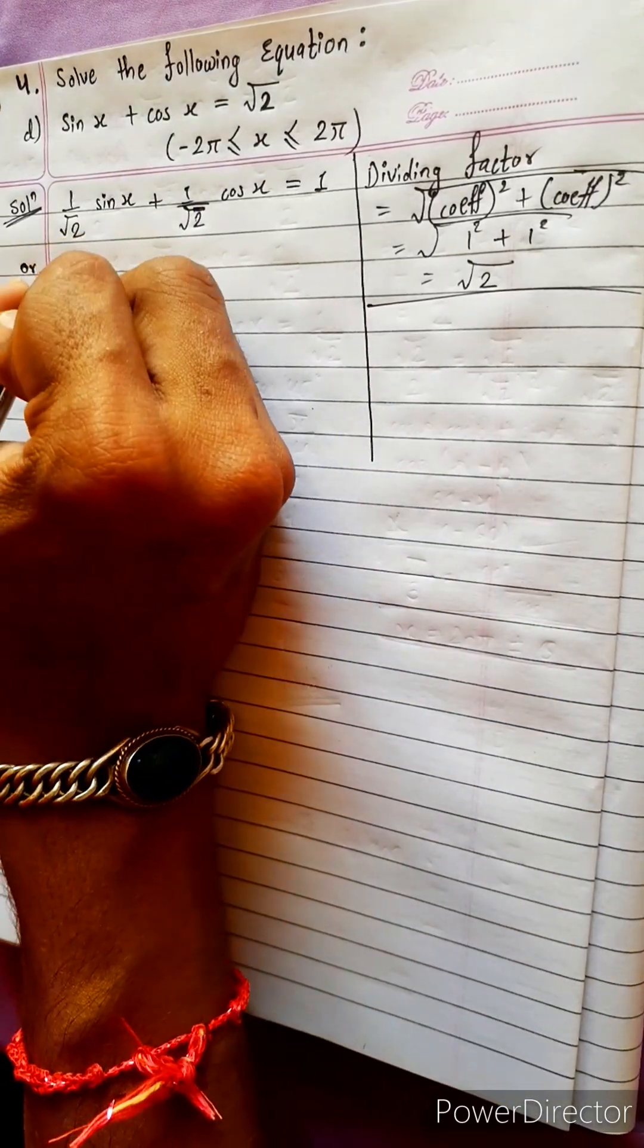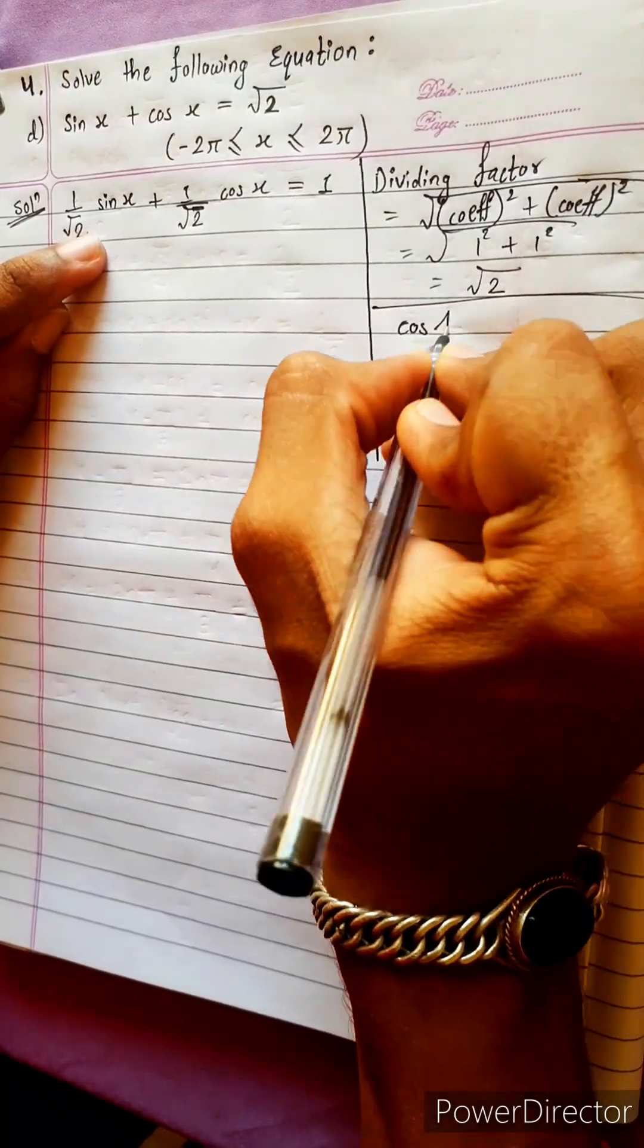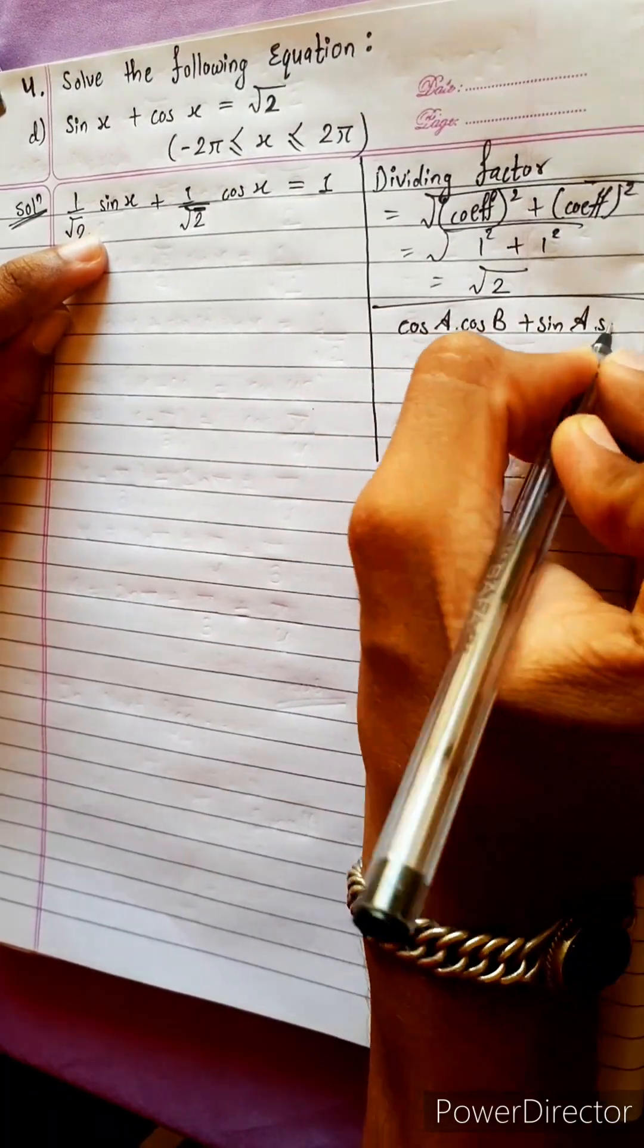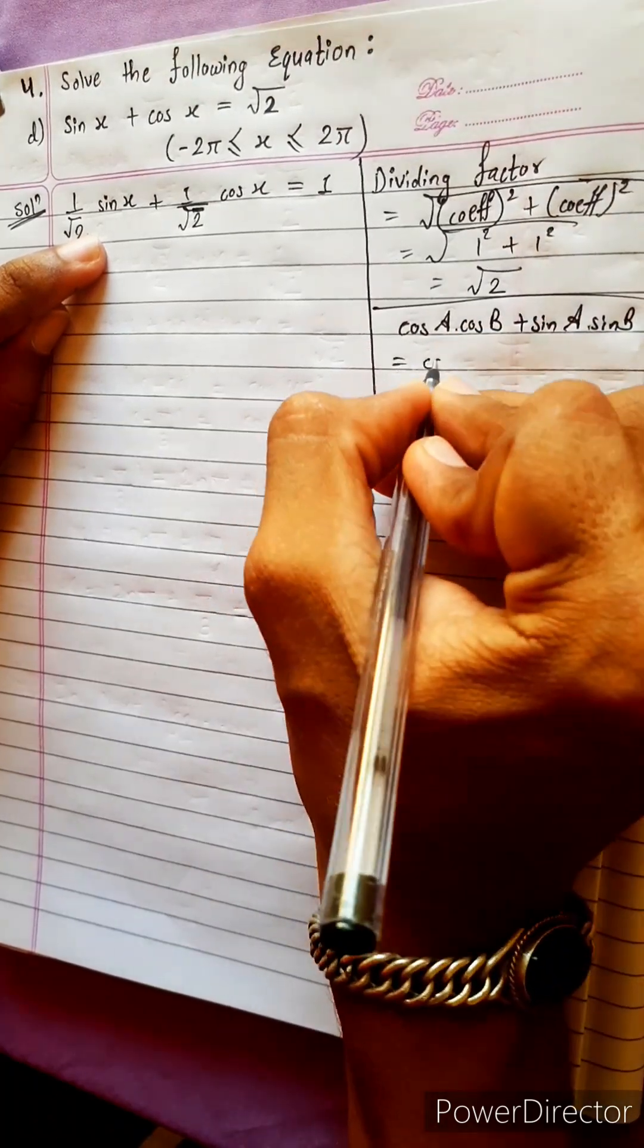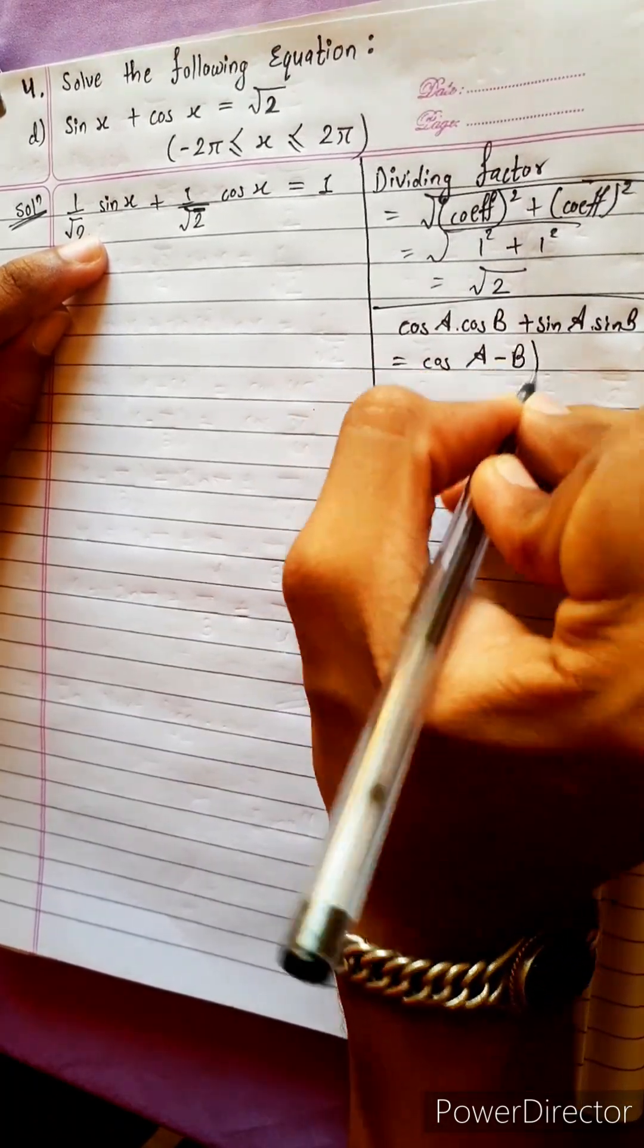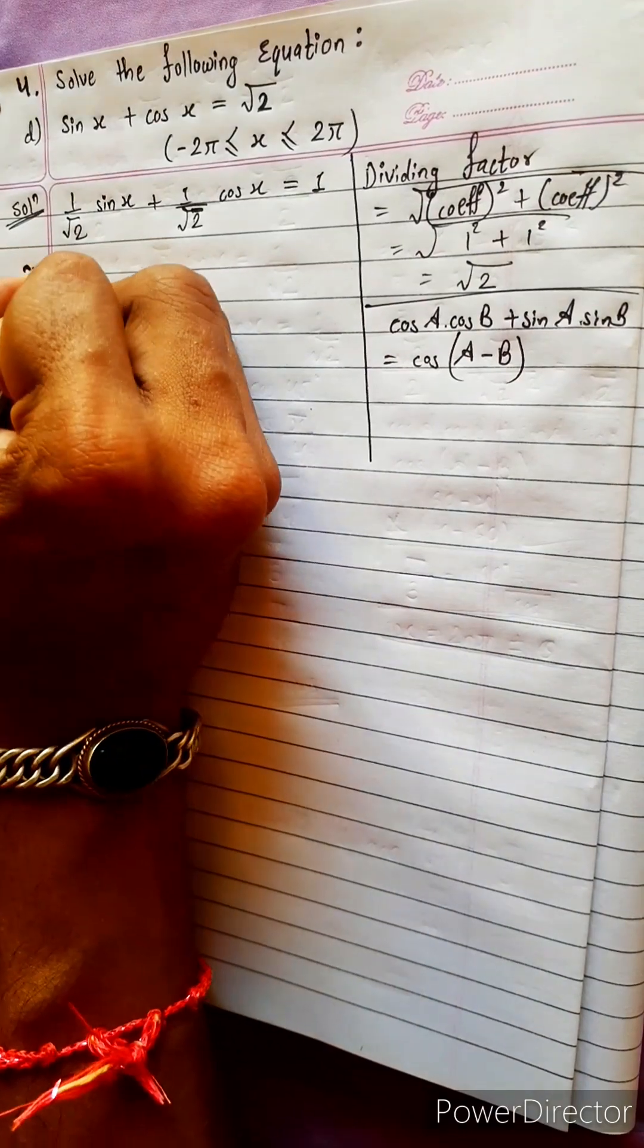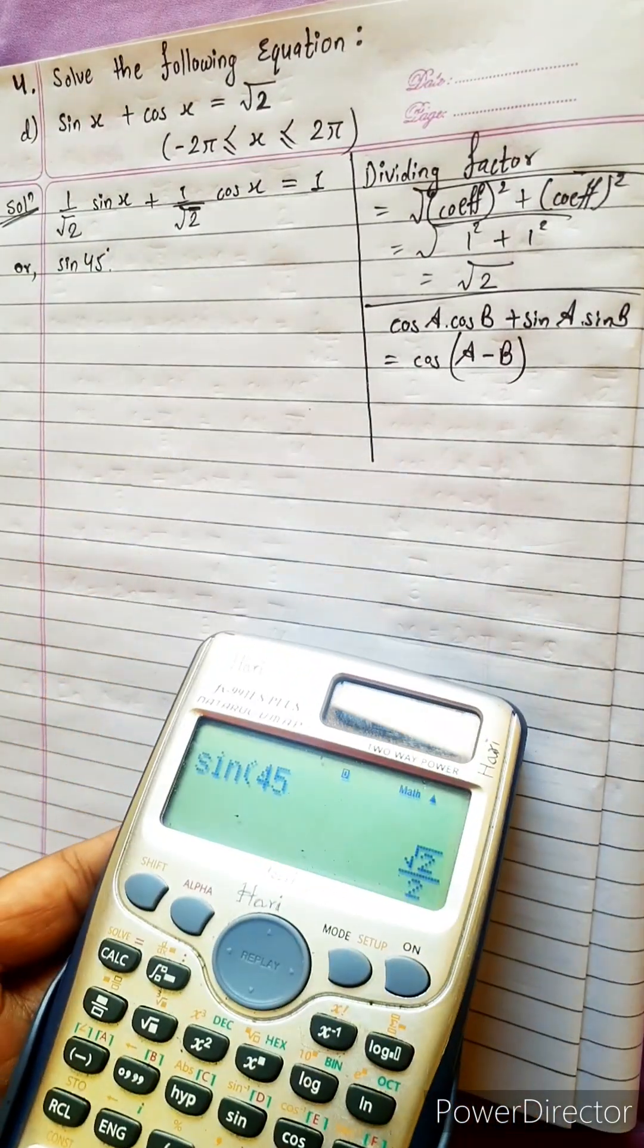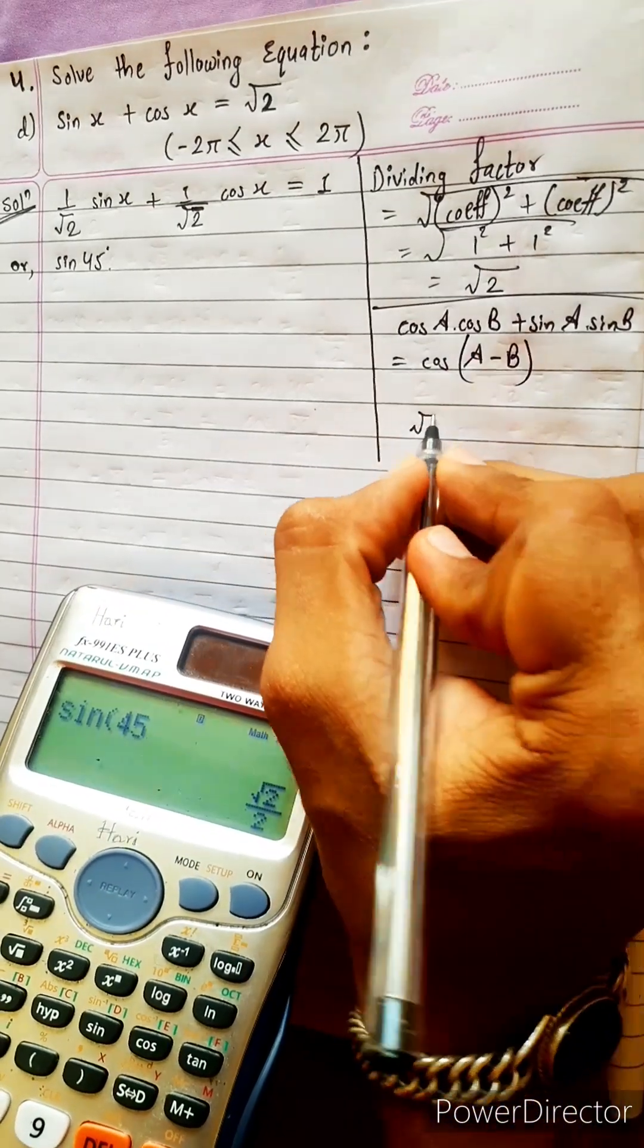Now 1 by root 2 means sin 45. Cos a cos b plus sin a sin b, it is cos a minus b. Then it must be 45, it is sin 45. But people don't believe, no? Sin 45.